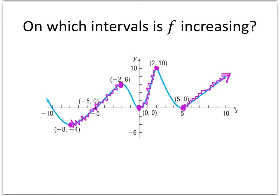So we've identified where the function is increasing, but what about the intervals? Well, when we talk about the intervals on which the function is increasing, we're always talking about x values. So the function is increasing from x equals negative 8 to x equals negative 2. And using our interval notation, we'll write that as parentheses negative 8 comma negative 2.